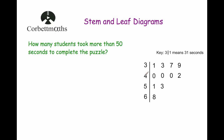Our next question says: how many students took longer than 50 seconds to complete the puzzle? The students who took in the 30s — 31, 33, 37, 39 — didn't take longer than 50 seconds. The next row gives students who took in the 40s: 40, 40, 40 and 42. Then in the 50s and above: 51, 53 and 68. Those three students took longer than 50 seconds, so the answer is three students.